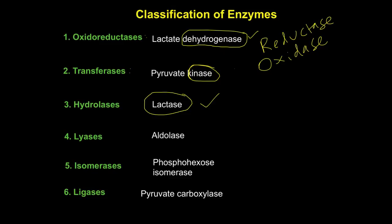The fourth category is lyases. Lyases work similarly to hydrolases in that they break a bigger compound into simpler ones, but without adding water. Hydrolases break compounds by adding water, whereas lyases break compounds without adding water. The example is aldolase, a glycolytic enzyme that breaks down fructose-1,6-bisphosphate into glyceraldehyde-3-phosphate and dihydroxyacetone phosphate.